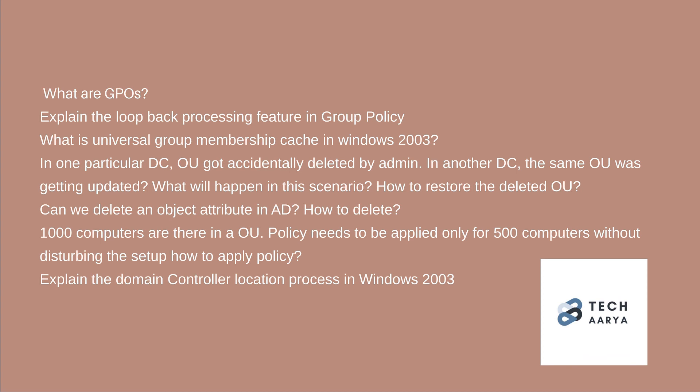115. Can we delete an object attribute and add it back? How do you delete it? 116. There are 1,000 computers in an OU and policy needs to be applied only to 500 computers without disturbing the rest of the setup — how do you apply the policy? 117. Explain the domain controller location process in Windows 2003.